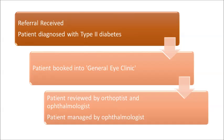Once a patient's referral is triaged according to urgency, they need to be booked into the appropriate clinic. Consider a patient diagnosed with diabetes. Traditionally, this patient would be booked to see an ophthalmologist. The model of care would work as follows: the referral is received, the patient diagnosed with type 2 diabetes is booked into a general eye clinic, reviewed by the orthoptist and ophthalmologist, and then managed by the ophthalmologist.